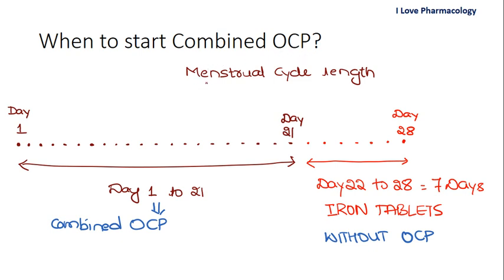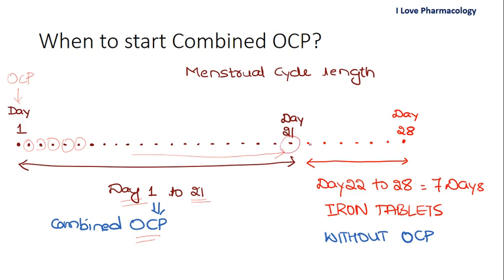Regarding when to start combined oral contraceptive pills: the normal menstrual cycle is 28 days. COC pills are administered from day one of the menstrual cycle until day 21. You give one pill each day — day one, day two, and so on until day 21. From day 22 to day 28, that is for seven days, you withdraw the COC pills and give only an iron tablet.